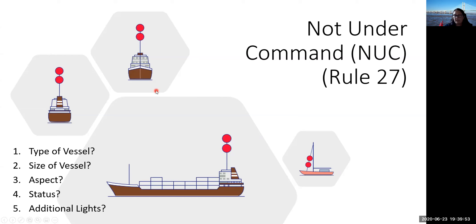Not under command: there are no navigation lights and no masthead lights — only two all-round red lights. The vessel has become not under command for some reason; it's not being propelled through the water. A good example is a yacht that's becalmed — no wind, no engine, therefore not under command, Rule 27. Without masthead lights showing, we can't determine the size of the vessel.